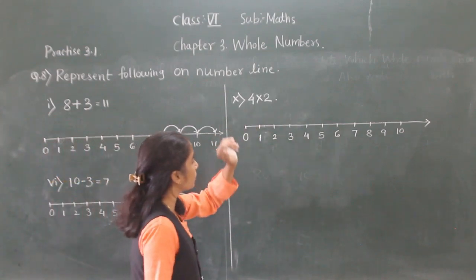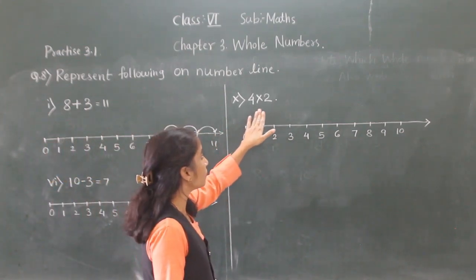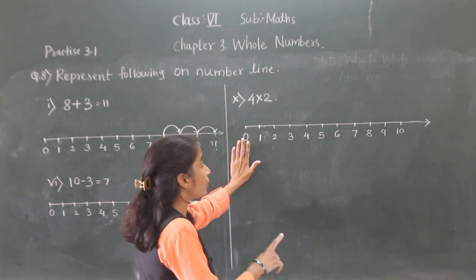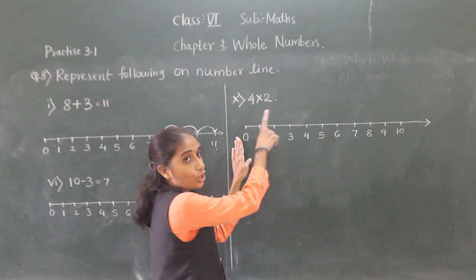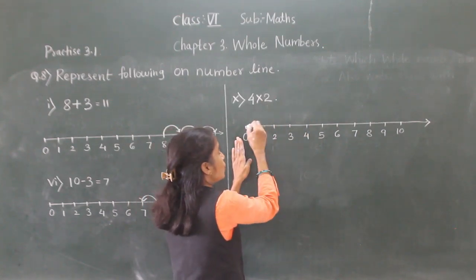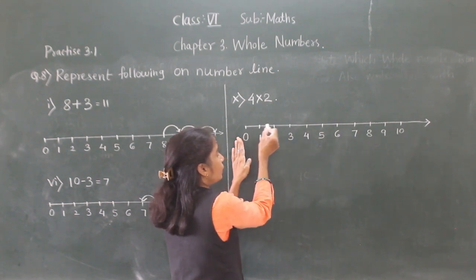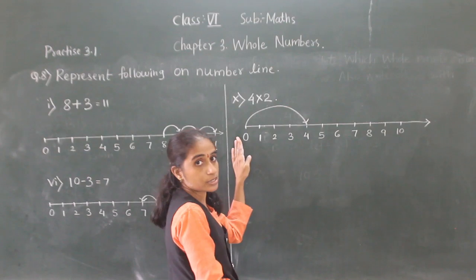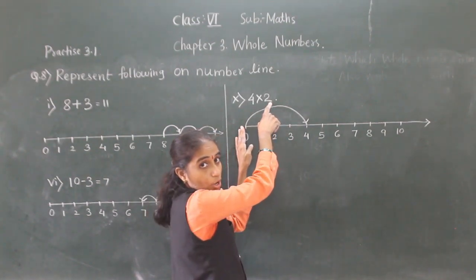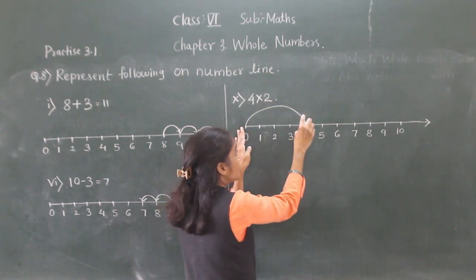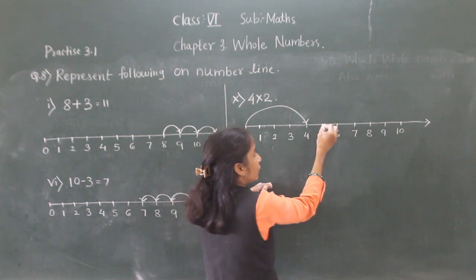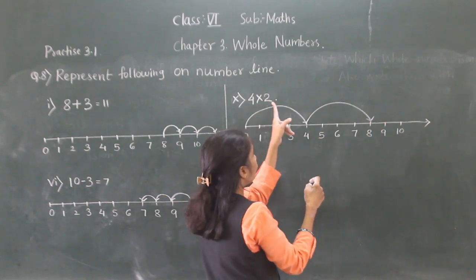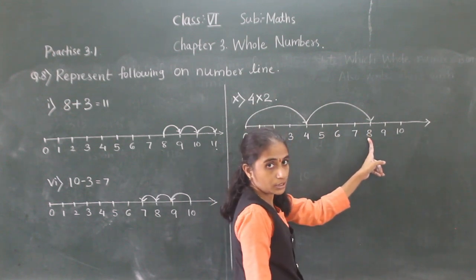Now let's solve multiplication: 4 into 2. Start from 0 and move 4 units at a time towards the right. We make 2 jumps: first jump lands on 4, second jump lands on 8. So 4 × 2 = 8.